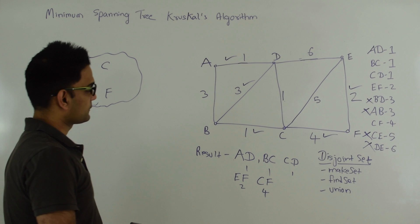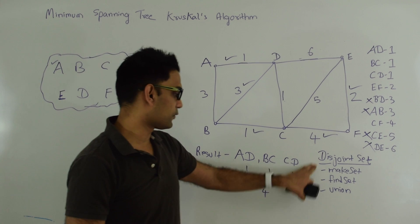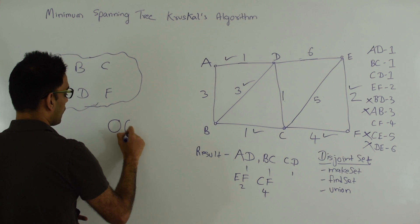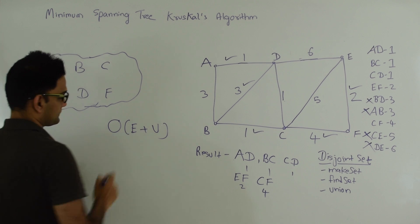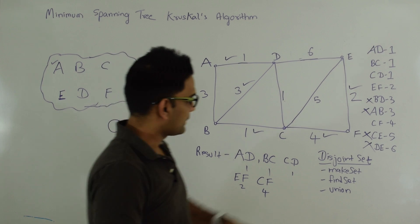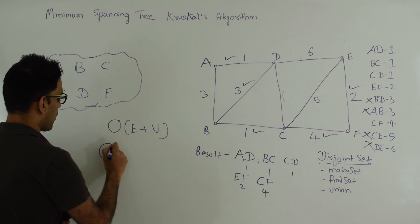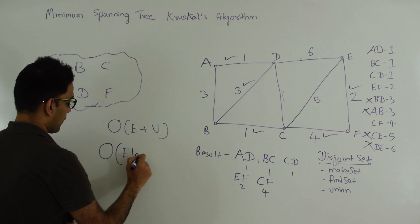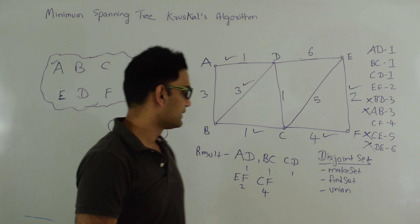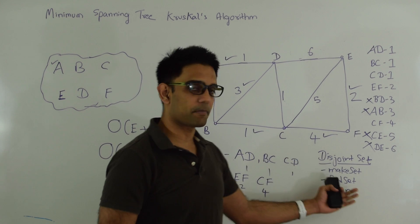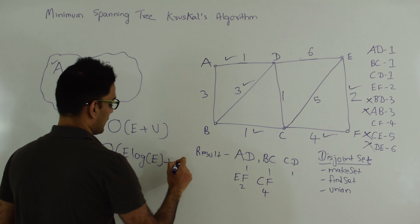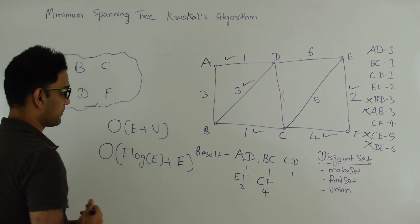So what is the space complexity? Space complexity is in the worst case whatever disjoint set takes plus what is stored in the result, so it will be O(E + V). What is the time complexity for this algorithm? If we have E edges, it will take O(E log E) time to sort these edges in non-decreasing order. And since N operations in disjoint set takes O(N) time, the rest of the operations would in the worst case take O(E) time. So total time complexity is O(E log E + E).